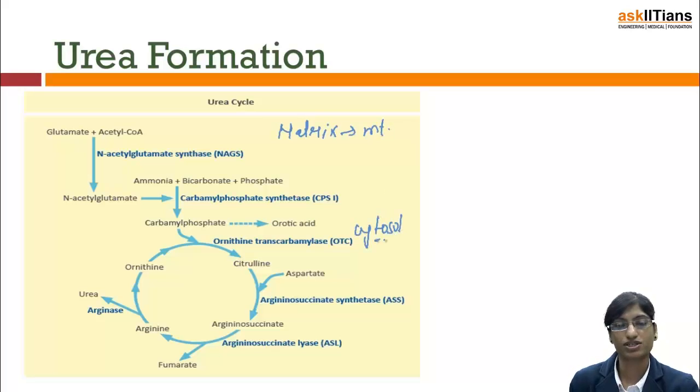So up to the formation of citrulline, this occurs in mitochondrial matrix. And the rest of cycle is in cytosol. Reactions start with glutamate acetyl-CoA in the presence of enzyme N-acetylglutamate synthase. And it forms N-acetylglutamate, ammonia, bicarbonate, phosphate. They together react with N-acetylglutamate in the presence of enzyme carbamoyl phosphate synthetase to form carbamoyl phosphate.